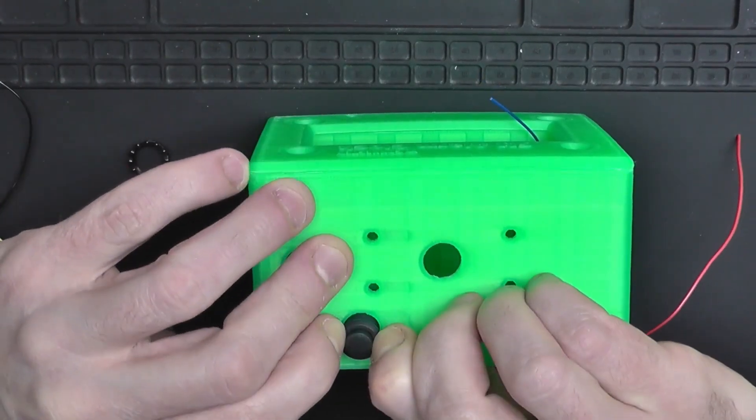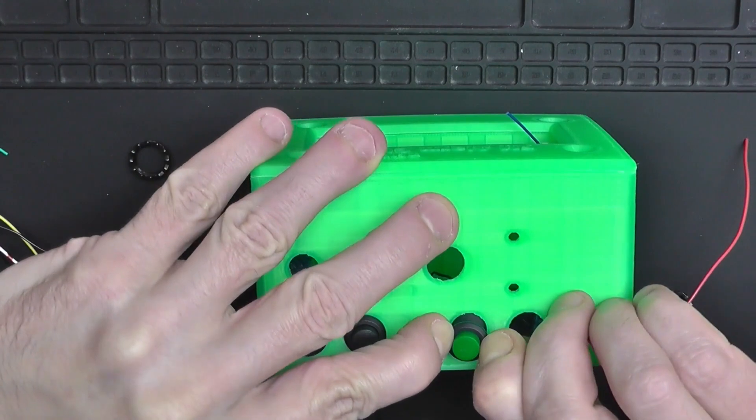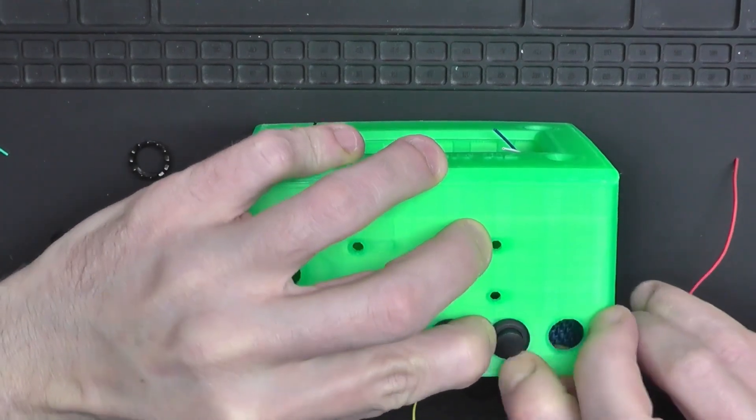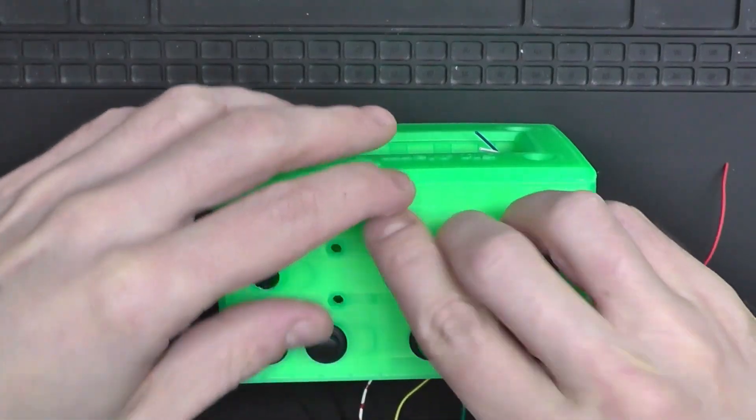Next, we'll start mounting the buttons. I've already soldered the wires, and one of these wires on each of these buttons is going to be the common ground.